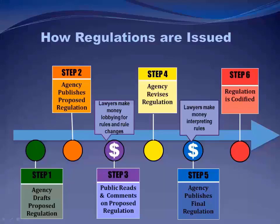Step six: the rule is codified — assigned to its appropriate subject title — in the Code of Federal Regulations. This process is very similar to how a statute at large is taken by the Office of Law Revision Counsel and split up into the United States Code by subject arrangement. The same thing happens with final rules: they get split up and placed under their subject headings in the Code of Federal Regulations.